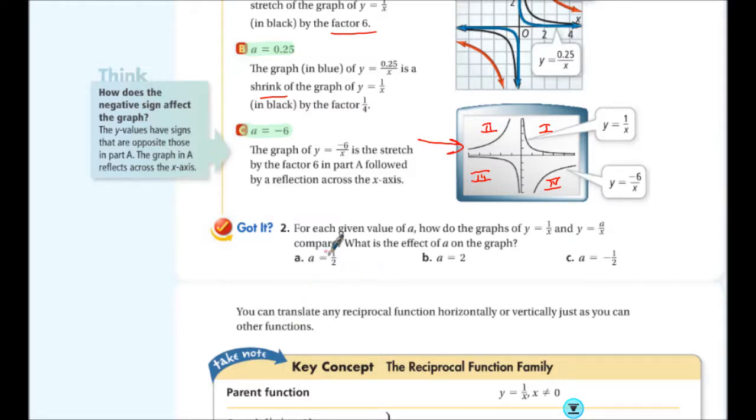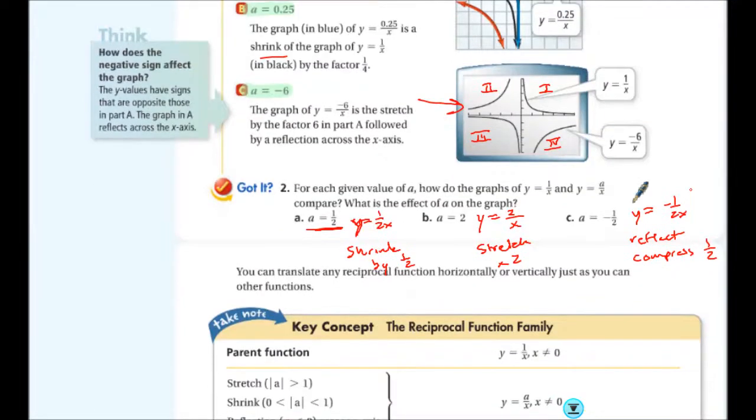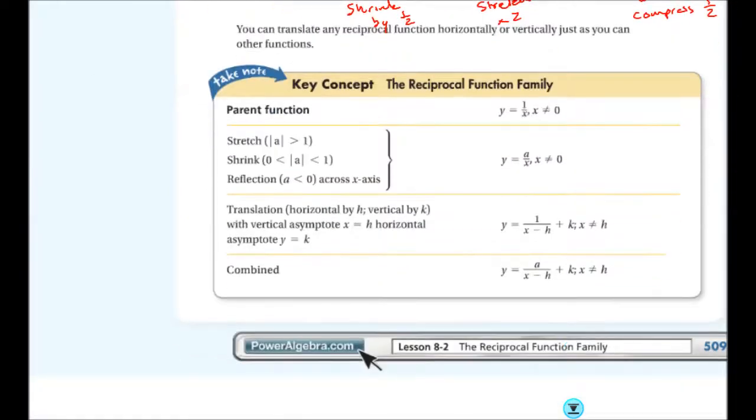Okay. So, if we make a 1 half, all right, so if this is, just making sure we're clear, this is y equals 1 over x and now a is, instead of a we have 1. So, this is y equals 1 over 2x. This is y equals 2 over x. This is y equals negative 1 over 2x. That's a really bad y. So, part a, this is a shrink or compression by 1 half. This is a stretch of 2. And this, obviously, is a reflection and a shrink or compression by 1 half.